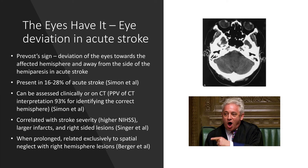There are varying figures about how common eye deviation is. One study reported it in 16 to 28% of acute stroke cases, though the severity of stroke wasn't well qualified — likely reflecting moderately to severe stroke presentations.